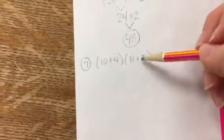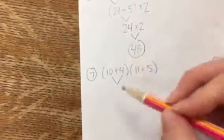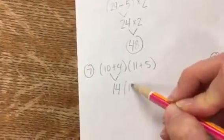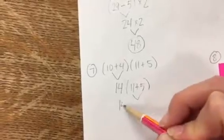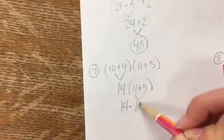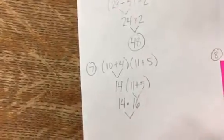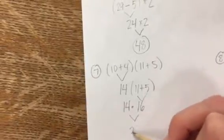Here I have two sets of parentheses. I'm going to solve what's in the first one first, and then I'm going to solve what's in the second one. 11 plus 5 is 16. 14 times 16 is 224.